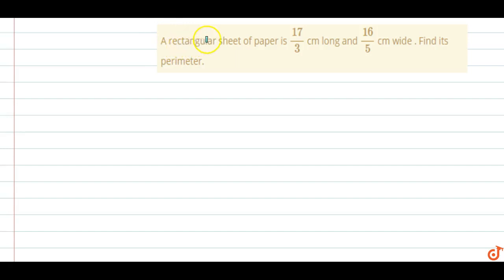In this question, a rectangular sheet of paper is 17/3 cm long and 16/5 cm wide. Find its perimeter. So, perimeter of rectangular sheet is equal to 2 times of length plus breadth.